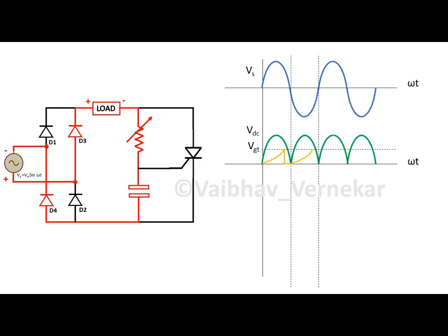In the negative half cycle, as the direction of load current remains same, capacitor charges with the same configuration, i.e. upper plate positive and lower plate negative. Once the triggering voltage VGT is reached, capacitor discharges, thus triggering on the thyristor.